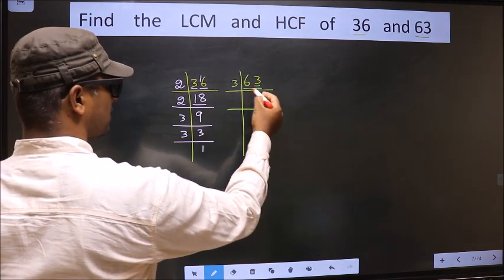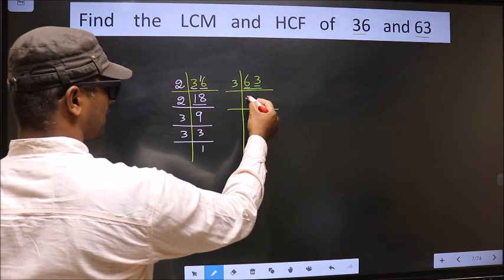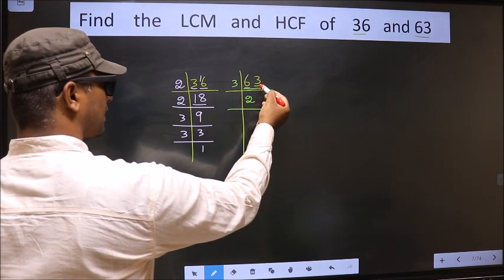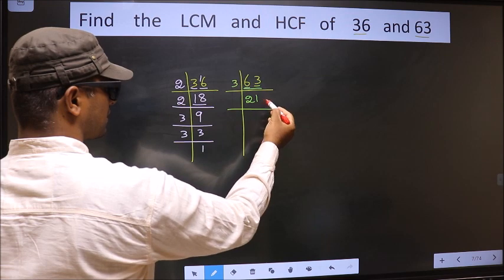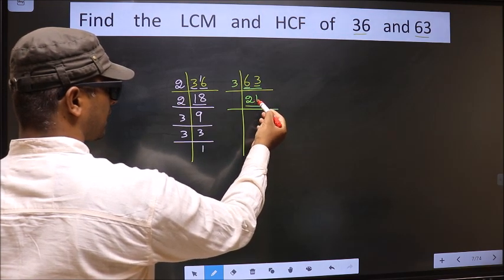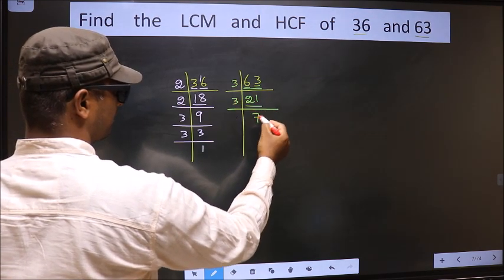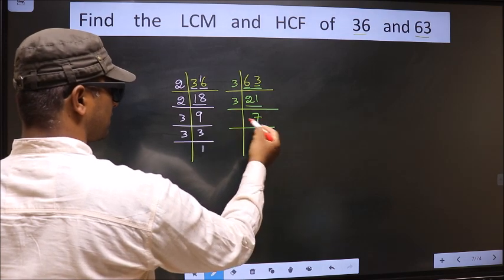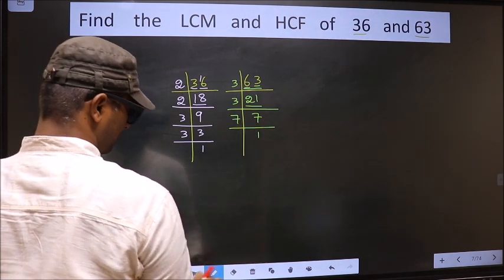So we take 3 here. The first number is 6. When do we get 6 in the 3 table? 3 twos are 6. The other number is 3. When do we get 3 in the 3 table? 3 ones are 3. Now here we have 21. 21 is 3 sevens, 21. Now we have 7. 7 is a prime number, so 7 divides 7.